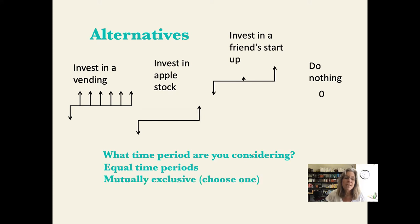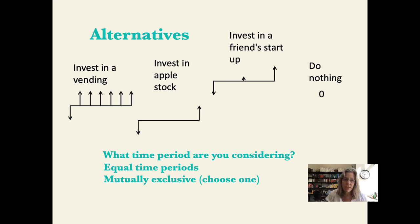The other thing is these alternatives all need to be mutually exclusive. You're not going to invest in a vending machine and Apple stock at the same time — you're going to do one or the other. Now you can form alternatives that combine options — invest in vending and Apple stock together as one option, invest in vending alone, invest in Apple stock alone, or invest in vending, Apple stock, and a startup. You can combine them, but they absolutely have to be mutually exclusive when you're comparing.